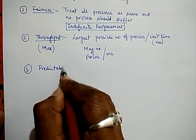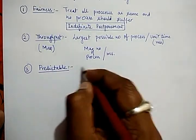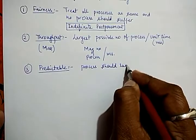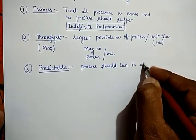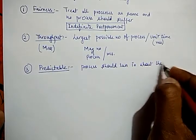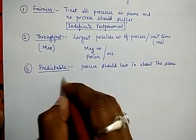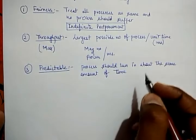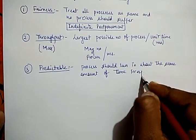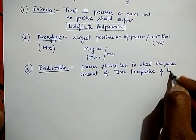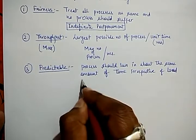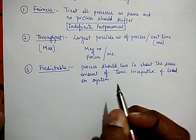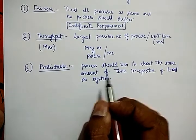The next objective of scheduling is called predictable. It suggests that every process should run in about the same amount of time, irrespective of load on the system. If a system is facing a higher load, it should not affect the process execution time — that is called predictable.